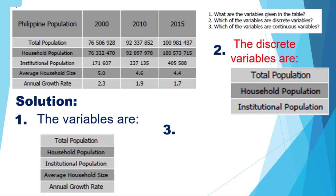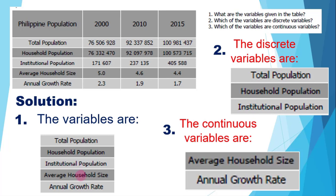For number 3, the continuous variables are whichever of the 5 variables are not in number 2. So we have average household size and annual growth rate as continuous variables. I hope you understood how to identify discrete and continuous variables.